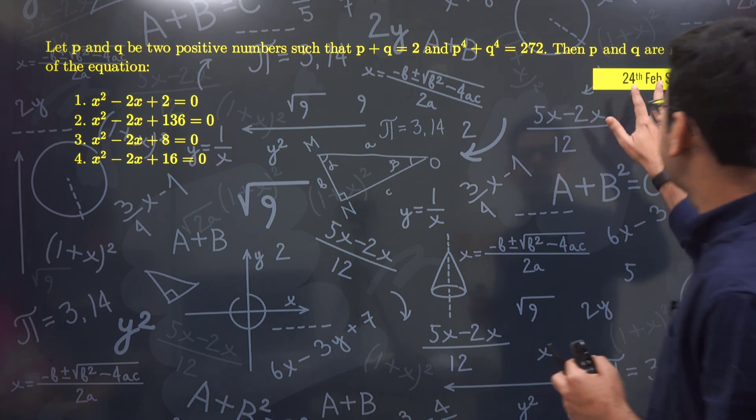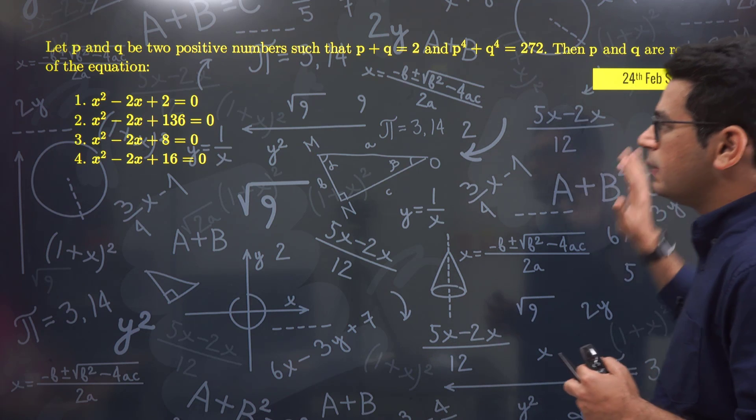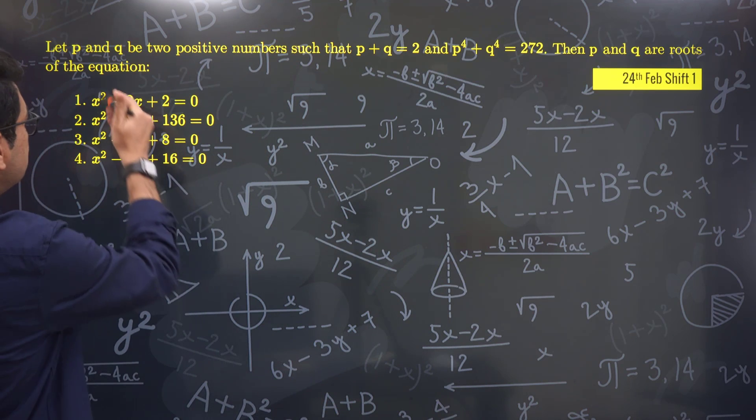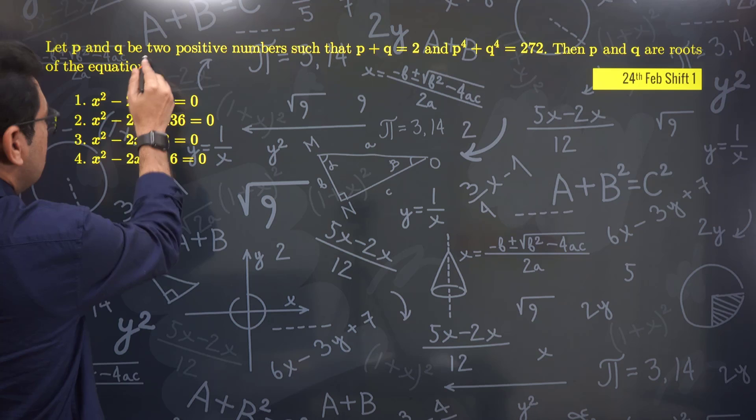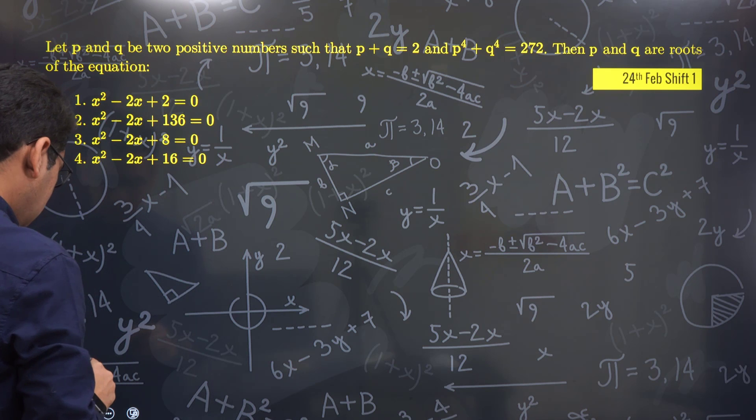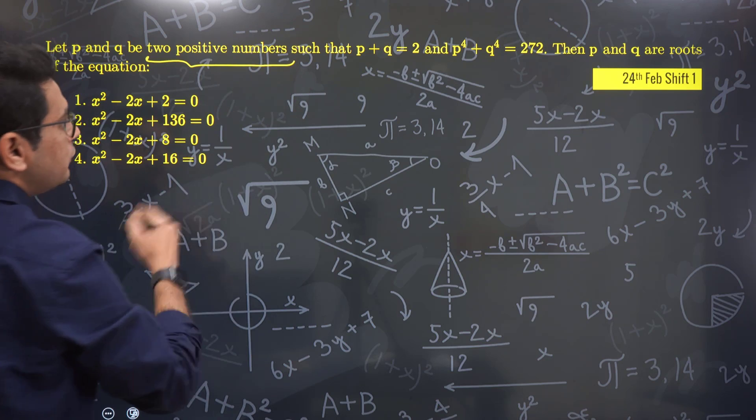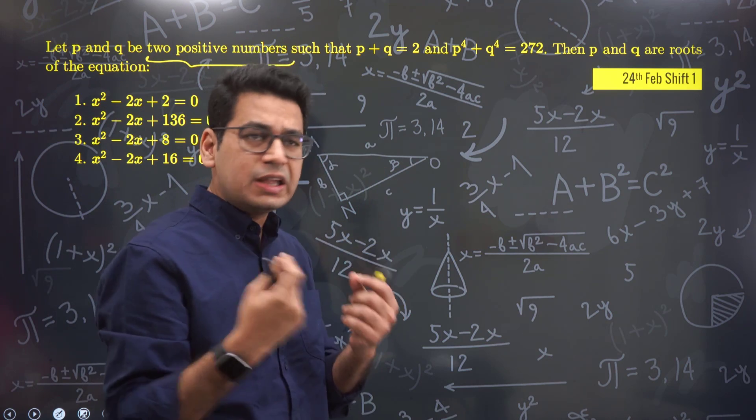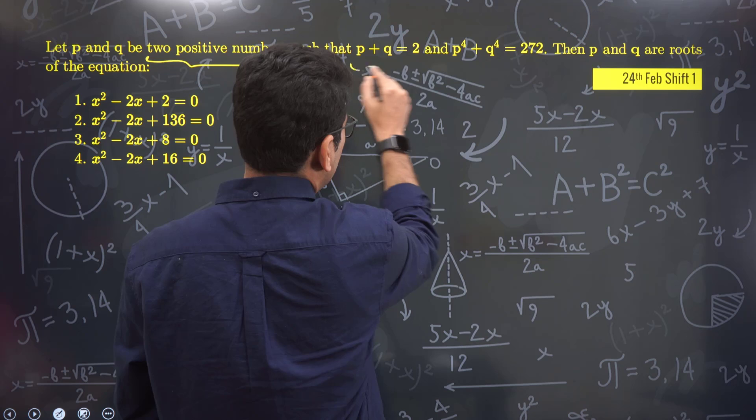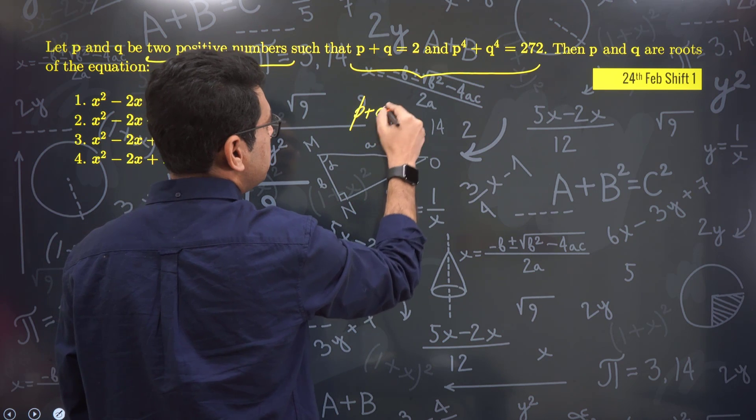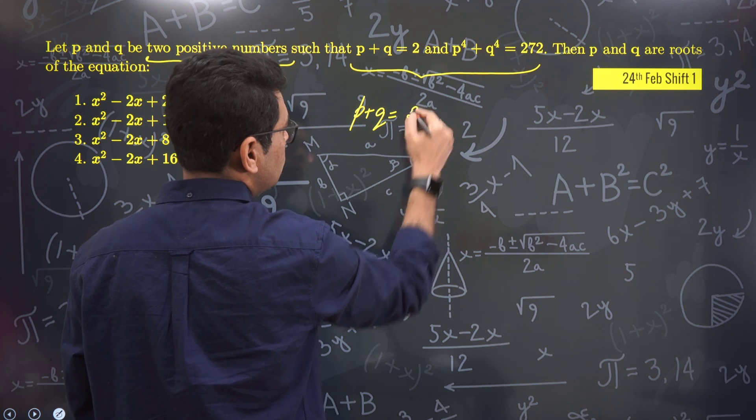One question was from 24th Feb shift 1. Please see to it. This is the problematic point here. They are saying two positive numbers, so if they are positive, this immediately strikes a well-prepared student who will get confused. They said p plus q is equal to 2.